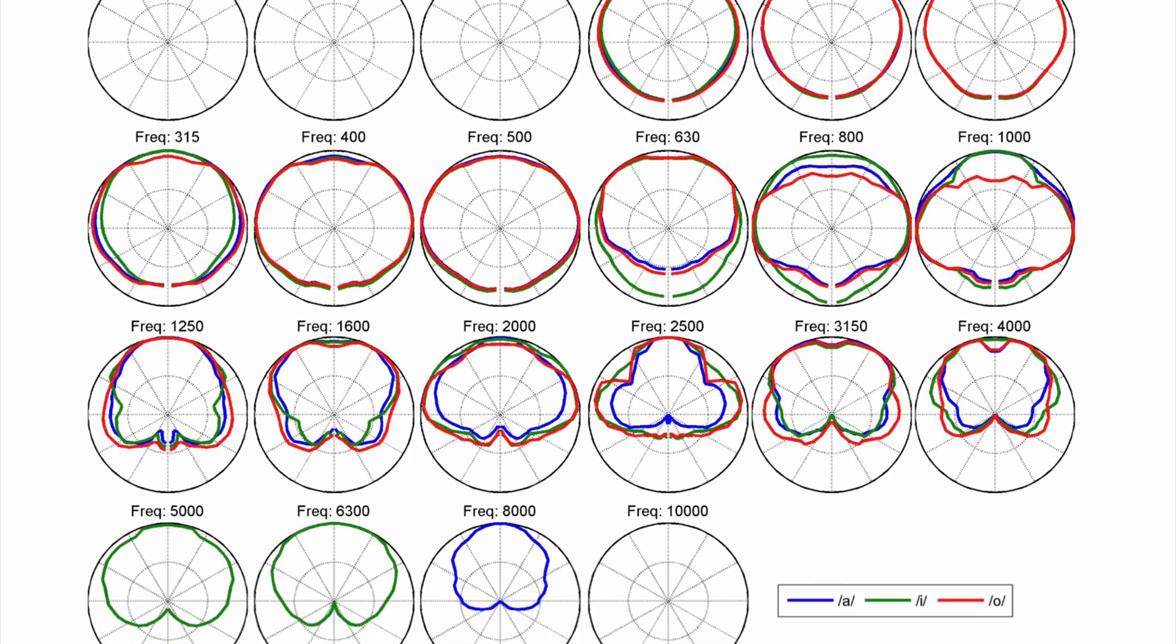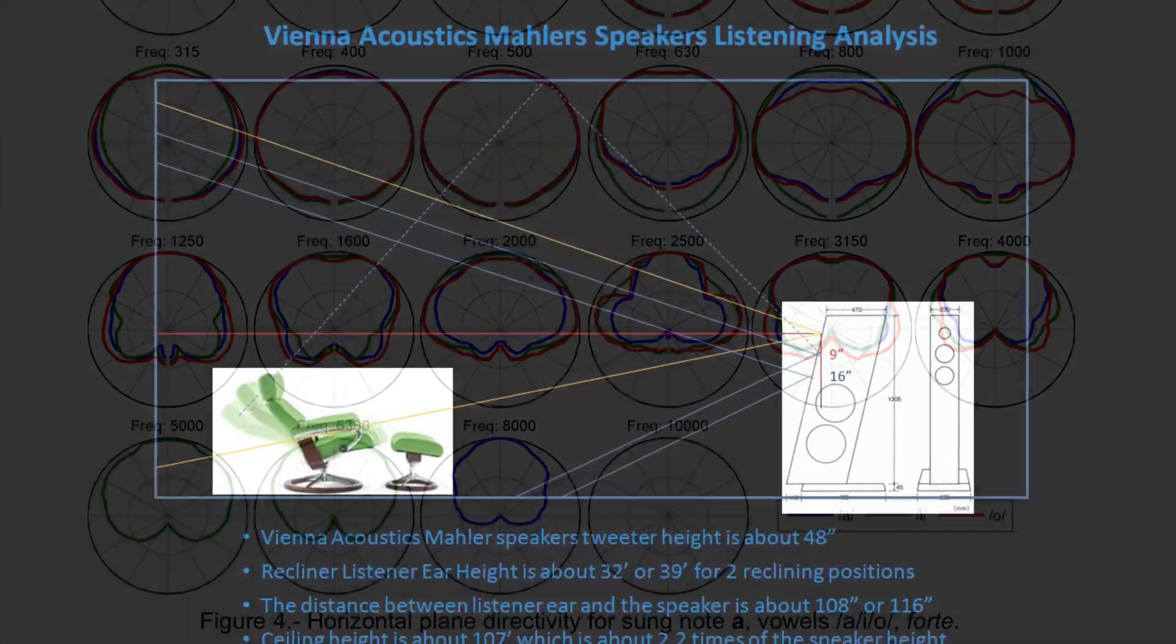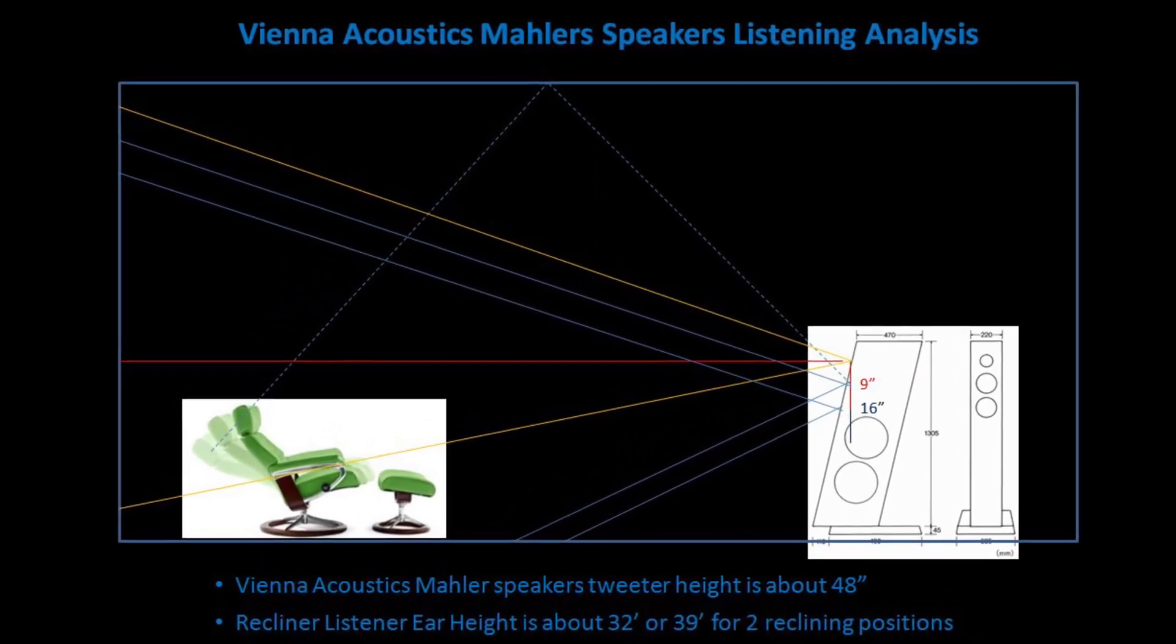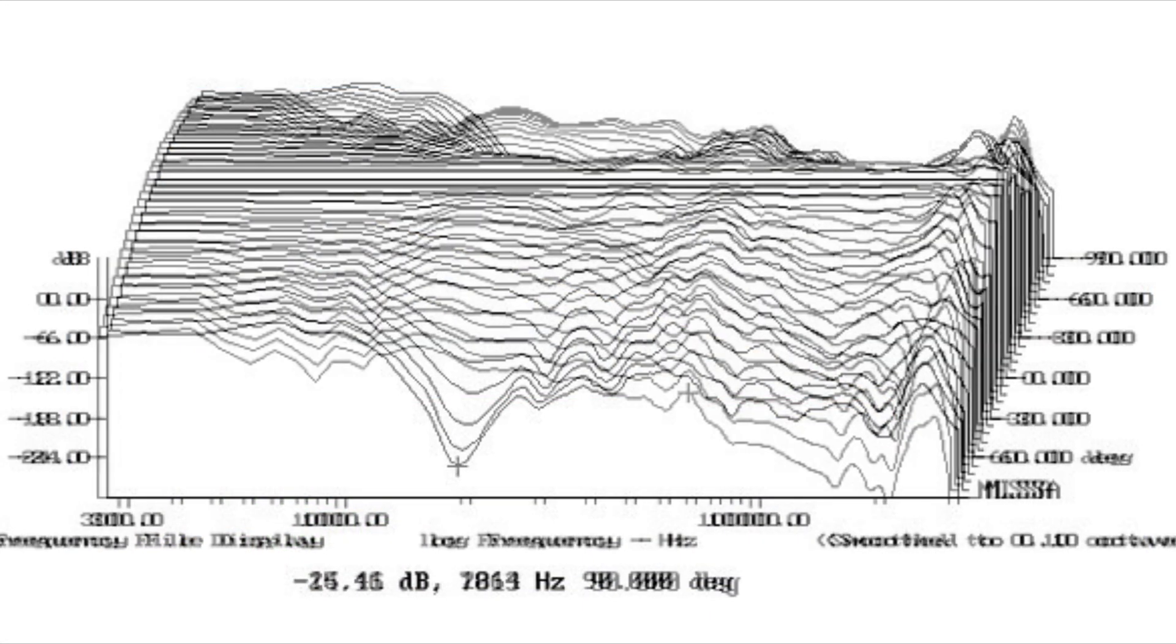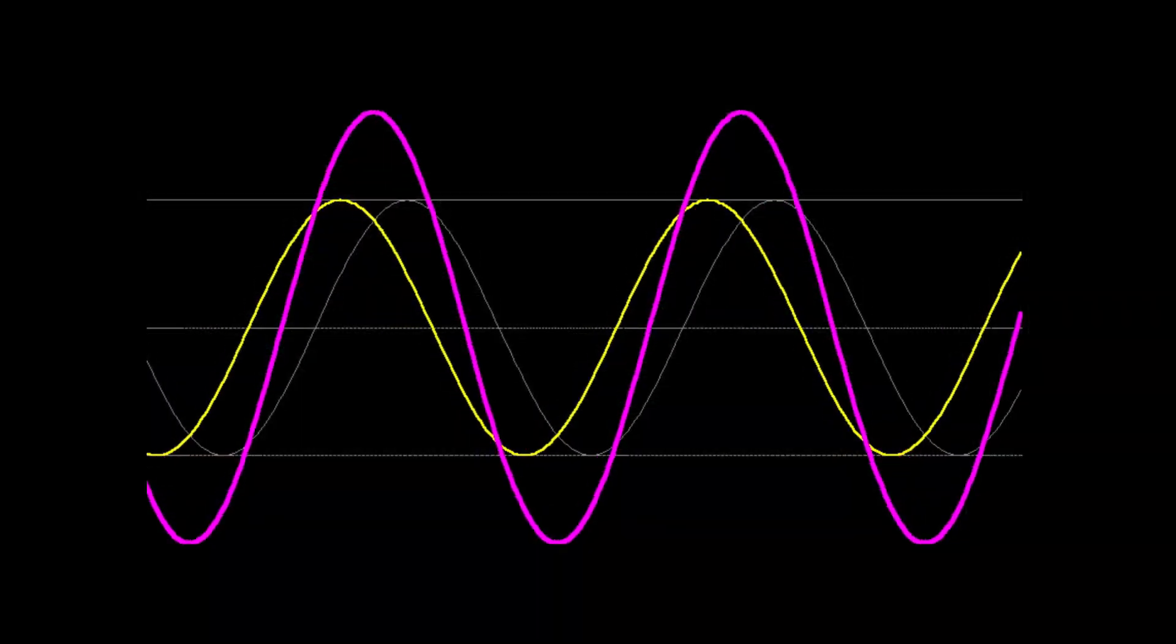Here is the human voice singing sound directivity patterns. Speaker tweeter driver is normally used to reproduce the frequency higher than 2 kHz which naturally will have gradually narrower sound directivity with higher and higher frequency.